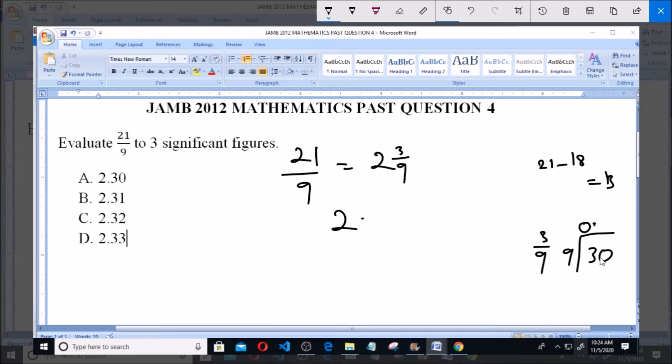Now 9 can go into 30 how many times? Three times, that is what we put: 3. Now 3 times 9 will give us 27. We subtract again, we have 3. Now 9 cannot go into 3, we add zero.